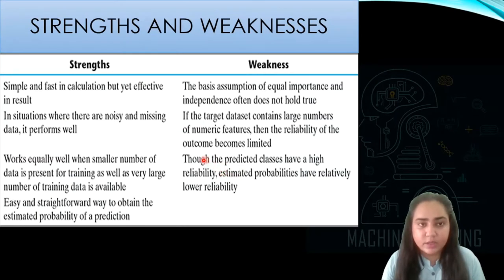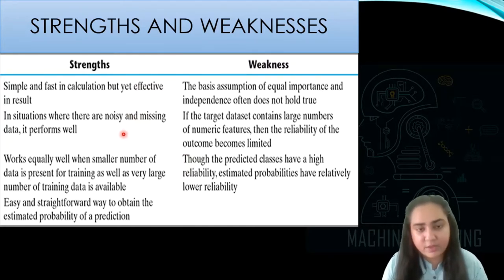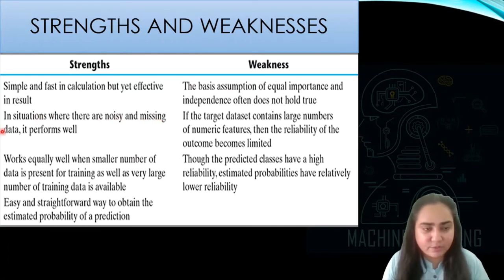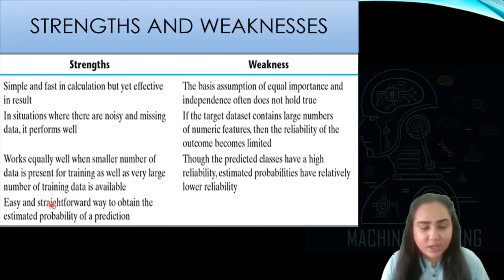Let's take a look at some advantages and disadvantages of the Bayes classifier. One of the strengths is that it is simple and fast in calculation, yet it is effective. Other algorithms can do the same classification task, but Naive Bayes is the simplest and very effective. Even if your data has noise or missing values, Naive Bayes still performs very well. It also works well with both smaller and larger datasets, and provides an easy, straightforward way to obtain estimated probabilities.